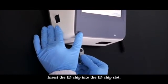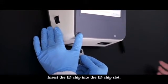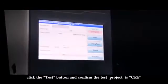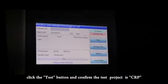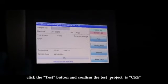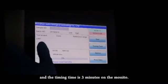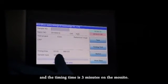Insert the ID chip into the ID chip slot. Click the test button and confirm the test project is CRP and the timing time is 3 minutes on the monitor.